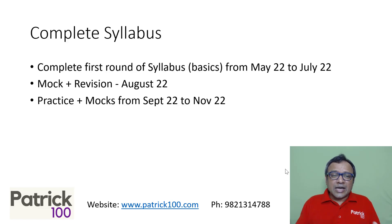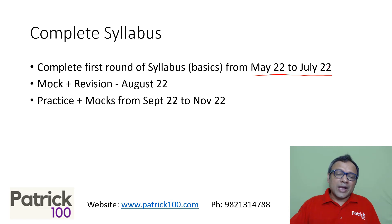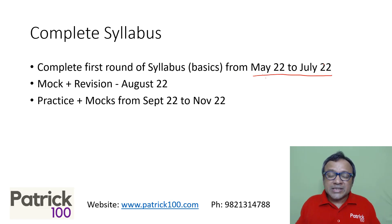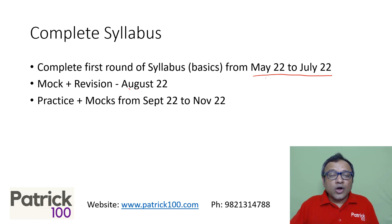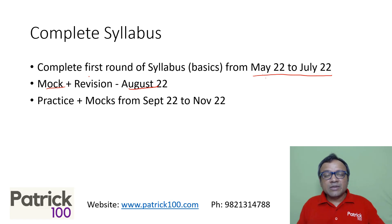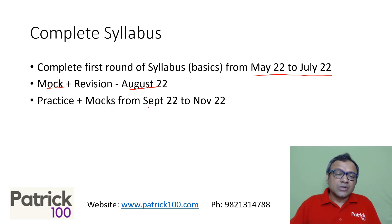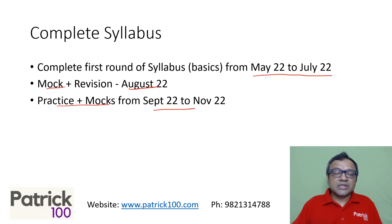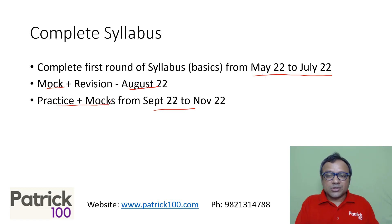The first thing you need to do is try to complete the syllabus by July. May, June, July is the first round where you complete the syllabus and cover your various fundamentals. In August, try to write one mock a week — the focus is revision. Then from September onwards, the focus will be practice plus mocks: more practice questions and writing the mocks. That's the broad plan for CAT preparation.